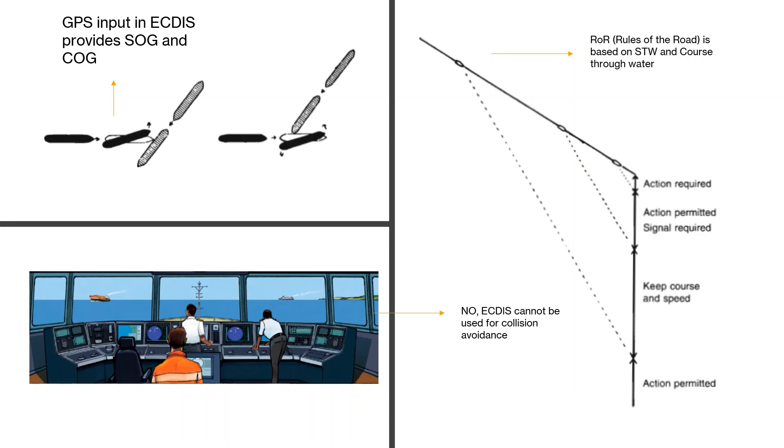You will see that the GPS provides important inputs into the ECDIS, but it is the input of course over ground and speed over ground, not speed through water or course through water. And what happens if the GPS switches off? What happens then to the ECDIS? Keep watching and I'll show you the video now.